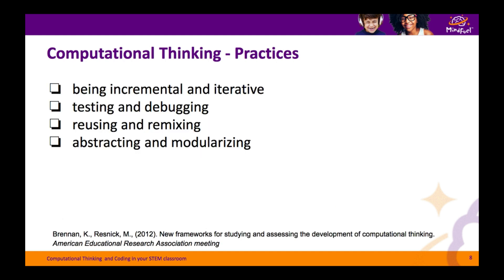Brennan and Resnick also identified different computational thinking practices — things that coders and programmers do when solving computational problems. Being incremental and iterative involves working step by step, building and imagining. When writing a program, we shouldn't write the entire thing and then test it. It's much easier to write a successful program in small steps: write one part of the code, make sure it works, then add on to it. We might also imagine new ways of doing things and go back to change our code. Another practice involves testing and debugging — running parts of our code to see if they work, and if they don't, carefully combing through and tweaking the code until we get rid of the error or bug.